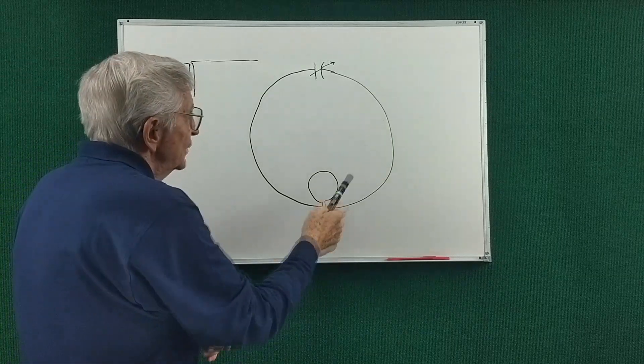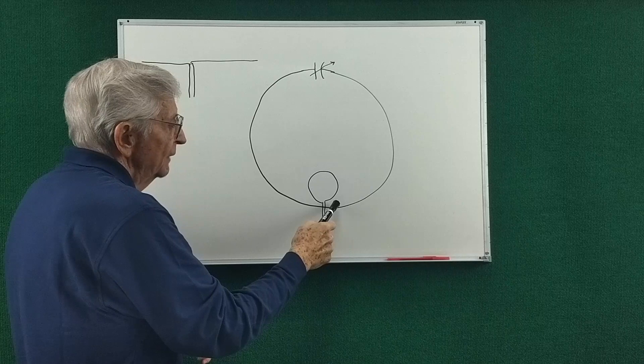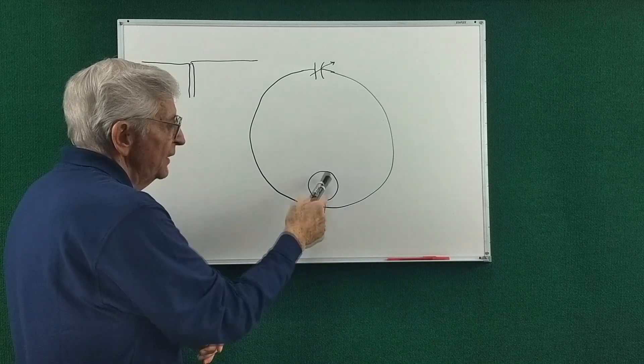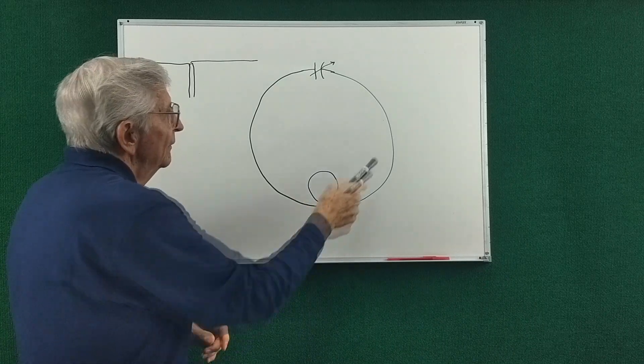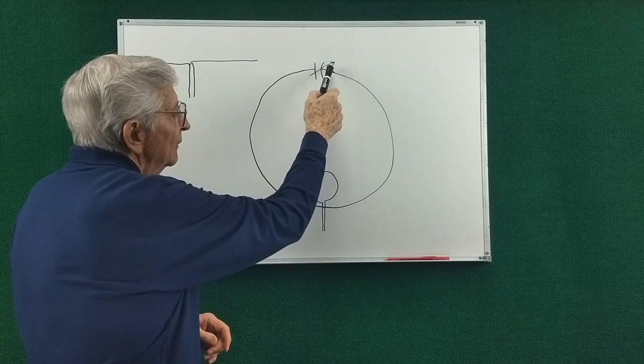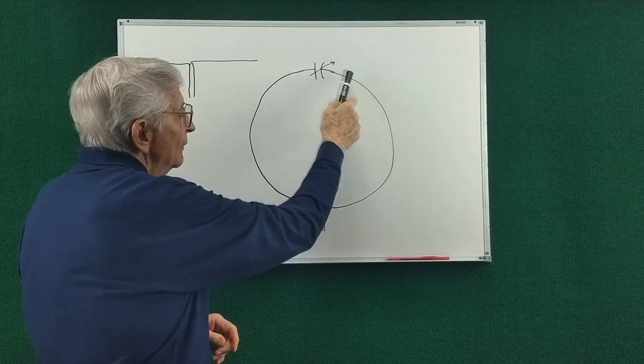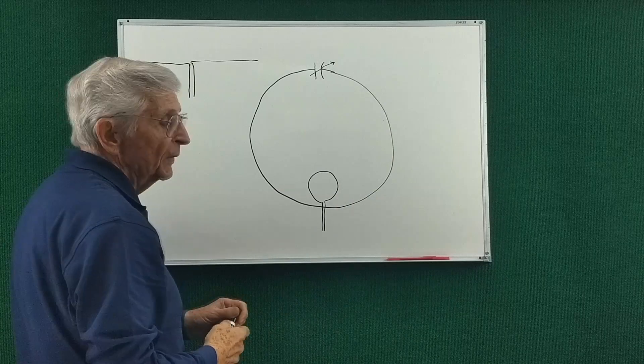The question here is, is the current at the feed point here the same as up here? Does it change as we go around this magnetic loop antenna?